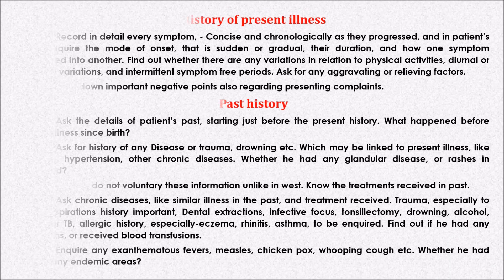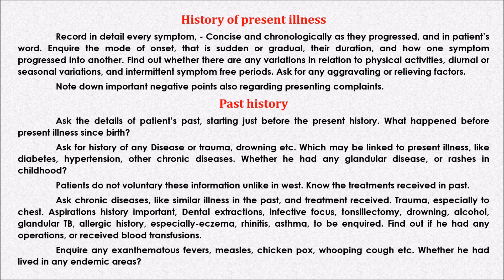History of present illness: record in detail every symptom, concise and chronologically as they progressed, and in the patient's own words. Inquire the mode of onset — sudden or gradual — their duration, and how one symptom progressed into another. Find out whether there are any variations in relation to physical activities, diurnal or seasonal variations, and intermittent symptom-free periods. Ask for any aggravating or relieving factors. Note down important negative points also regarding presenting complaints.